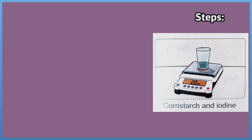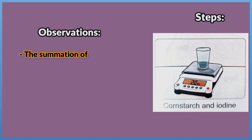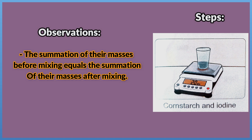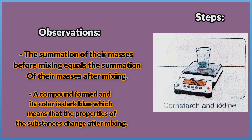3. Weigh 10 gm of cornstarch and 10 gm of iodine using the balance. 4. Mix the cornstarch and iodine together using a spoon, then weigh the masses of them after mixing and compare their masses before and after mixing. Observations: The summation of their masses before mixing equals the summation of their masses after mixing. A compound formed and its color is dark blue, which means that the properties of the substances change after mixing.